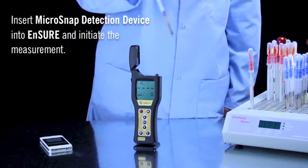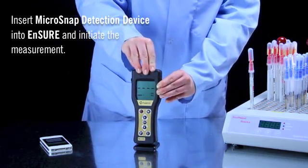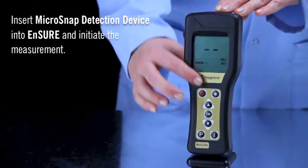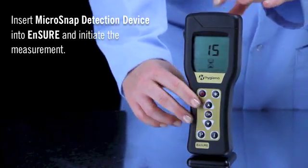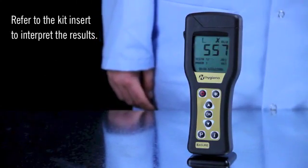Using the Ensure luminometer, select the product or location that is being tested. Insert the MicroSnap detection device into the read chamber, close the lid, and press OK to initiate measurement. Results will be displayed in 15 seconds.